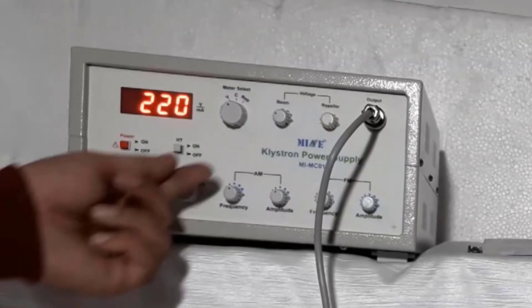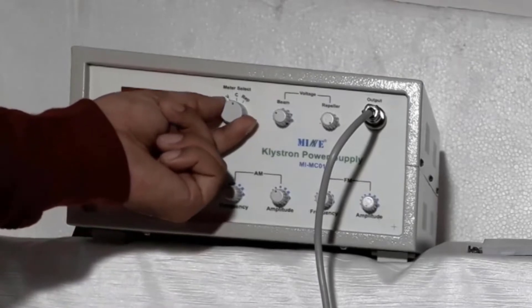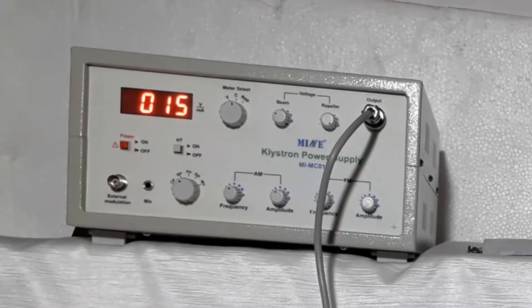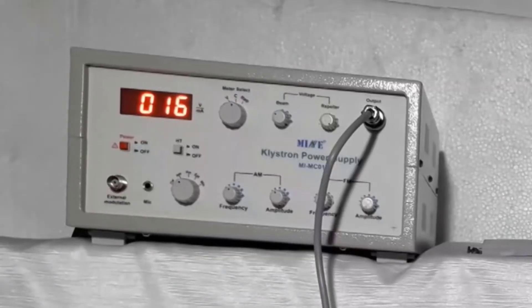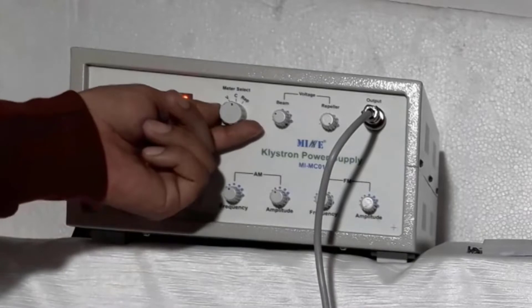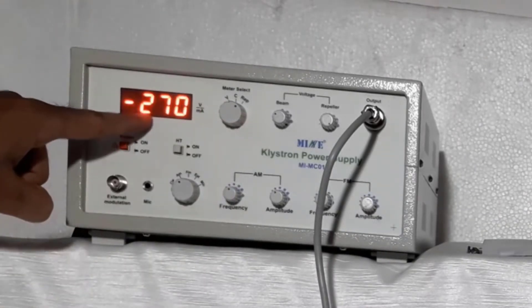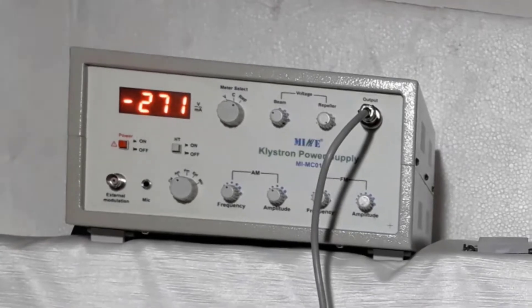Now change meter select knob to current and see the value of current. It would be approximately 15 to 20 milliampere. Now change meter select knob to repeller voltage and see repeller voltage. It would be approximately minus 270 volts.